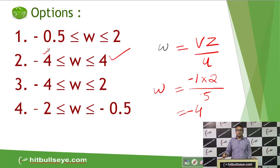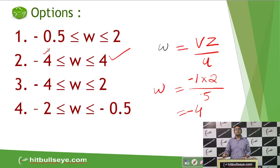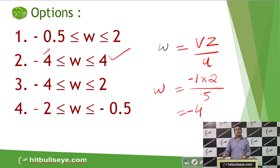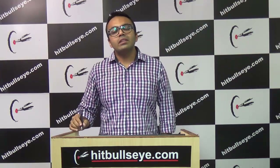In option 2, the minimum possible value of W is minus 4 and the maximum is 4 — the sign is the only difference, and the magnitudes are equal. So I need the option where both minimum and maximum magnitudes are the same, and that is option 2. This conclusion comes purely from observing that the sign of V determines the sign of W, making option 2 the answer.